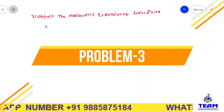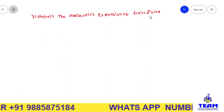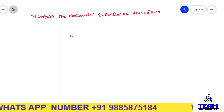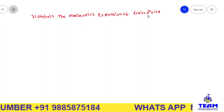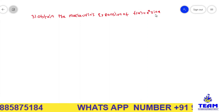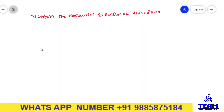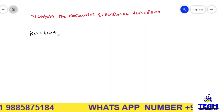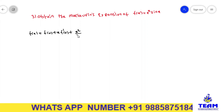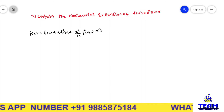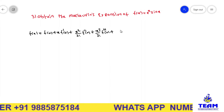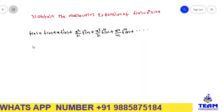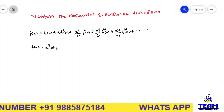Now the third problem: obtain the Maclaurin series expansion of f(x) = e^x·sin(x). This problem can be done in two methods. The first method is by using the Maclaurin series directly. In the second method, I can write the expansions of e^x and sin(x) and multiply them to get the same answer. From the Maclaurin series: f(x) = f(0) + x·f'(0) + x²/2!·f''(0) + x³/3!·f'''(0) + ...